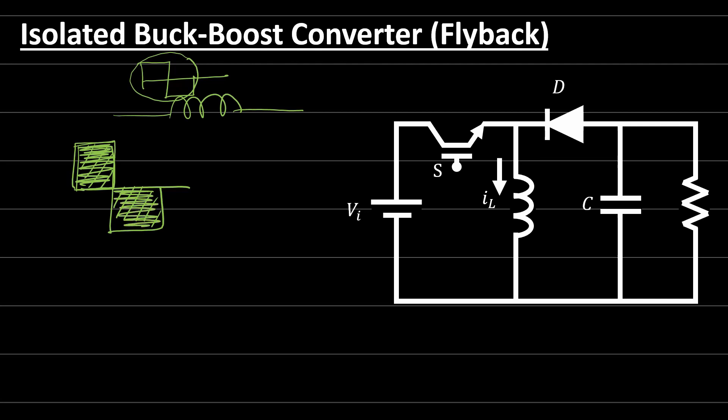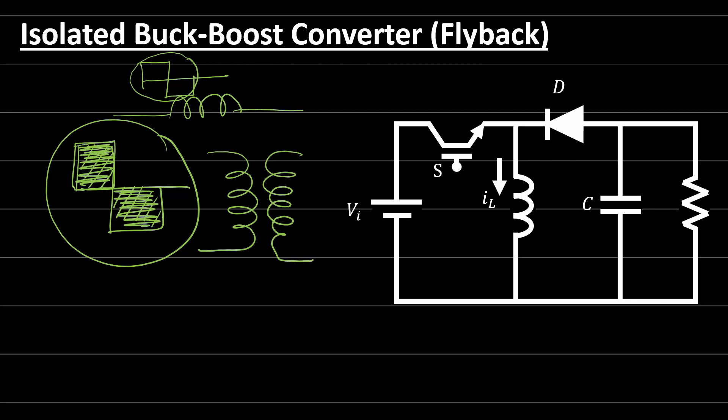So we can search for this waveform and see if we can apply it to a transformer. If you look at the buck-boost converter, we find that it is designed as if it were an isolated power converter. Why? Because in the middle of this converter, we have an inductor.